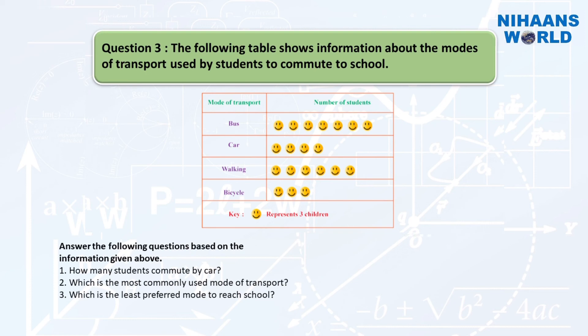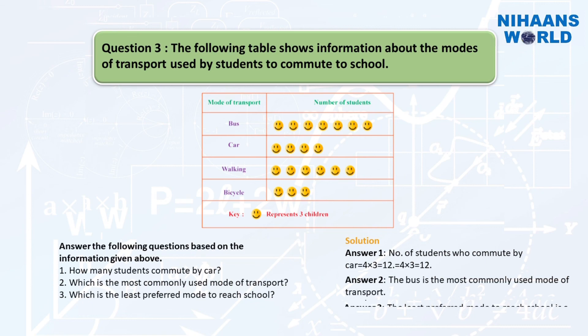Solution. Answer number one: number of students who commute by car equals 4 multiplied by 3 equals 12. Answer number two: the bus is the most commonly used mode of transport. Answer number three: the least preferred mode to reach school is bicycle.